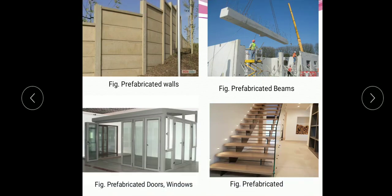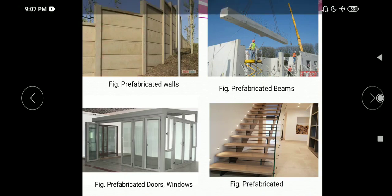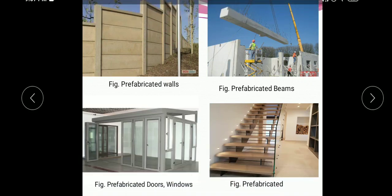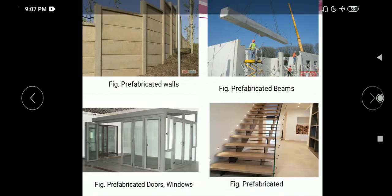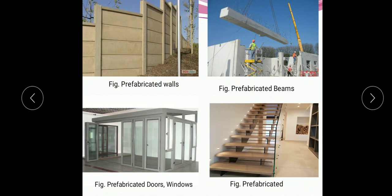Here are some examples of prefabricated materials. The first photo shows the prefabricated compound wall — these are various panels which are connected to each other to form the compound wall. The second photo shows the prefabricated beam, which is prefabricated in the industry or factory and can be directly used on the construction site as per requirement.